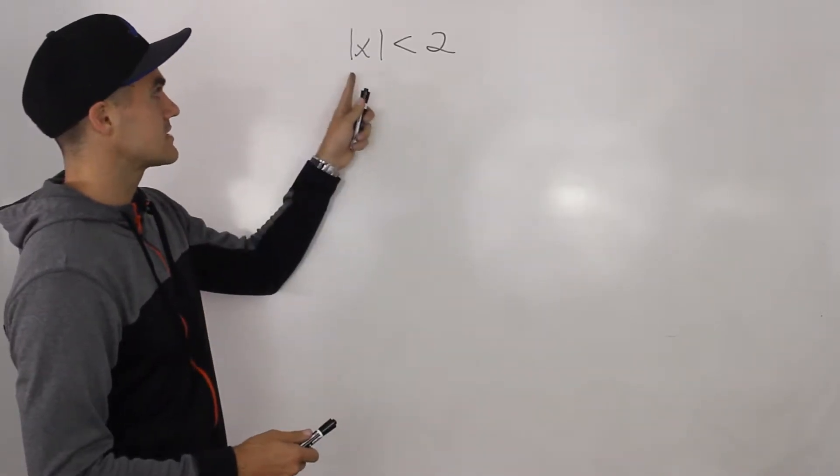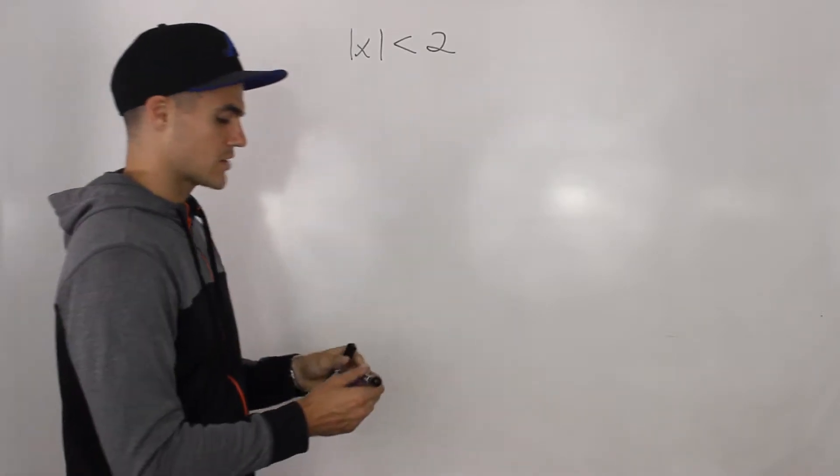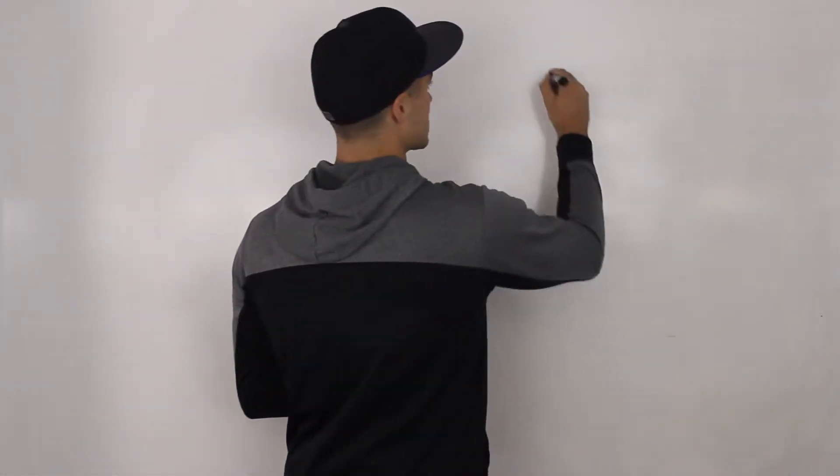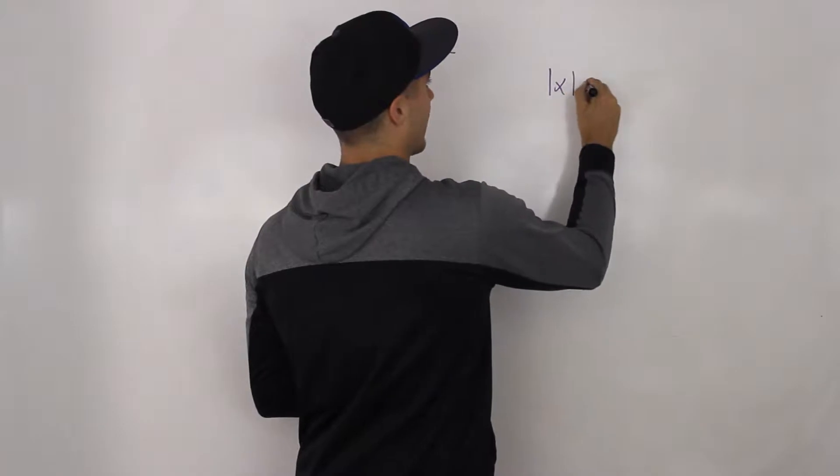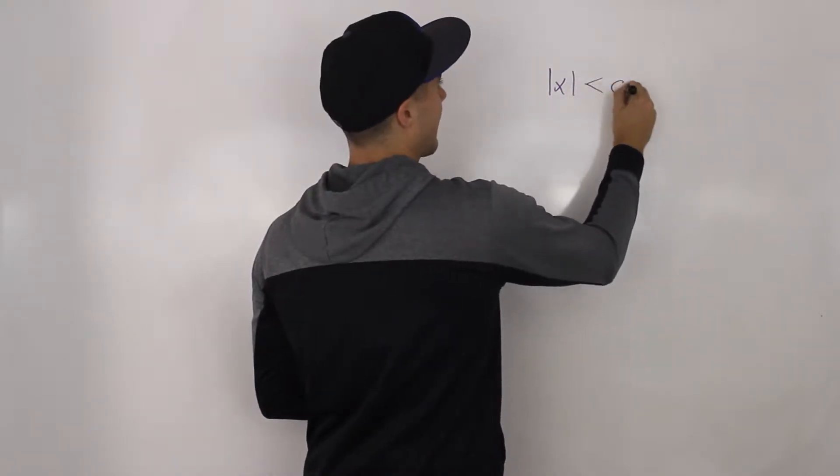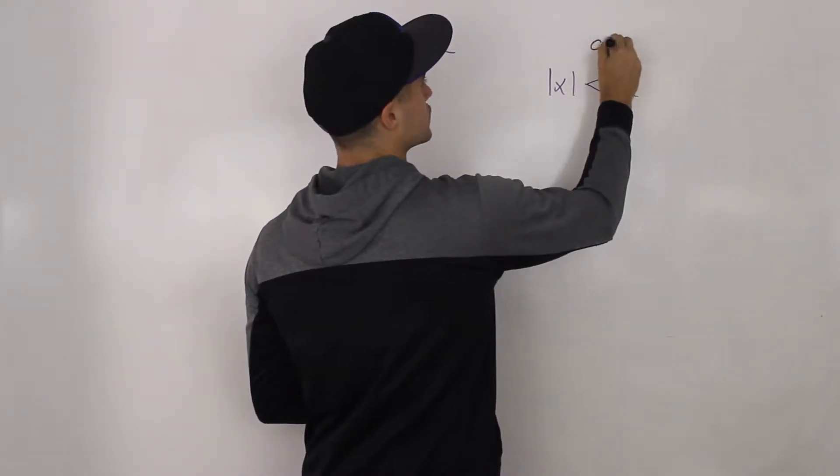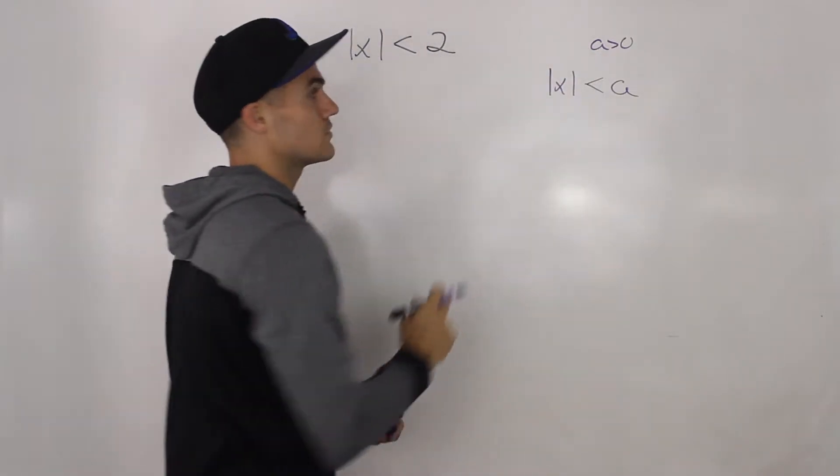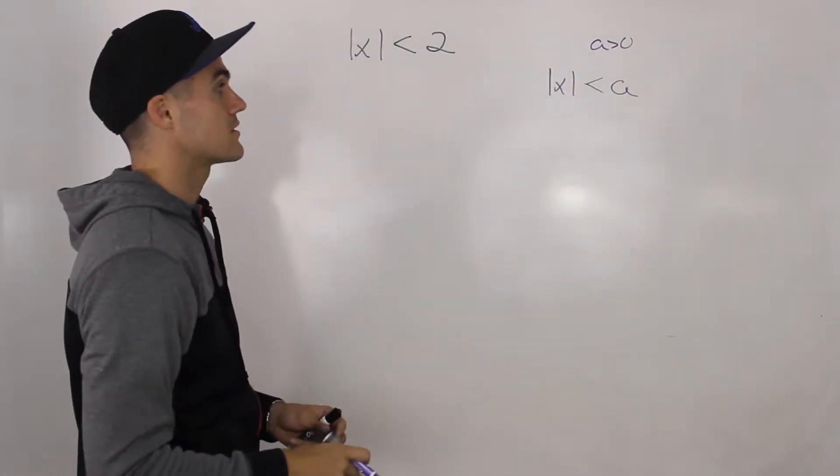The case that relates to this specific question is when the absolute value of x is less than a, when a is greater than 0. Notice 2 is greater than 0, it's a positive number.